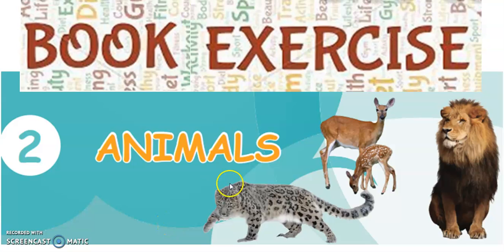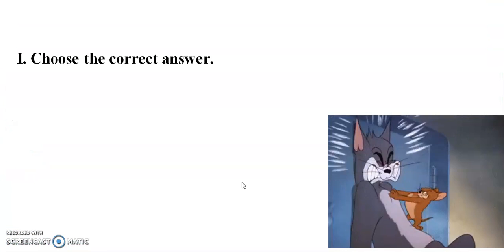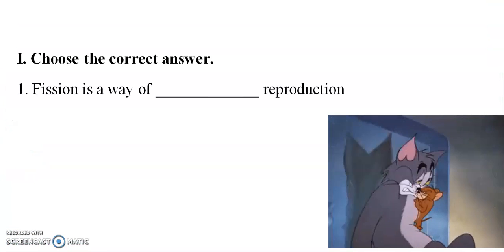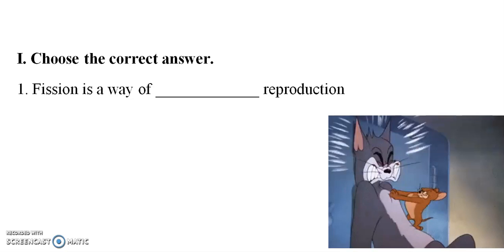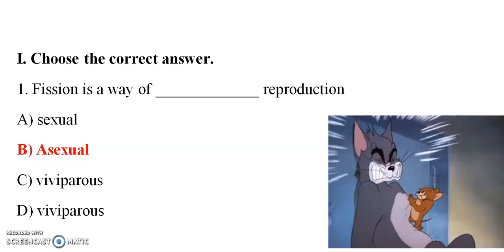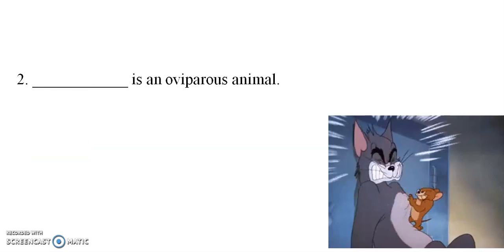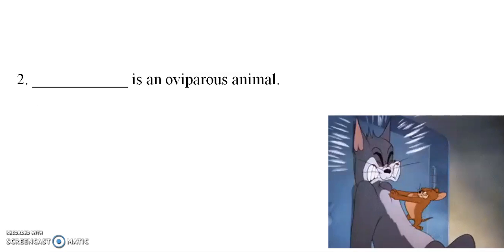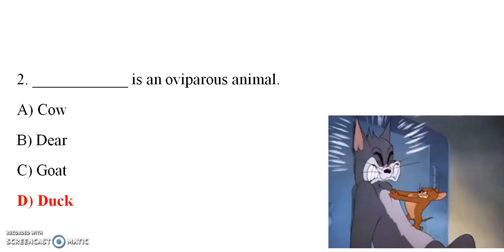Good morning students. Today we are going to see the book exercise on animals. First question: choose the best answer — fish is a way of blank reproduction. This is an oviparous animal. The options are cow, deer, goat, and duck — and the answer is duck.